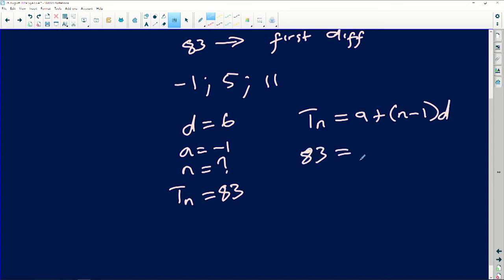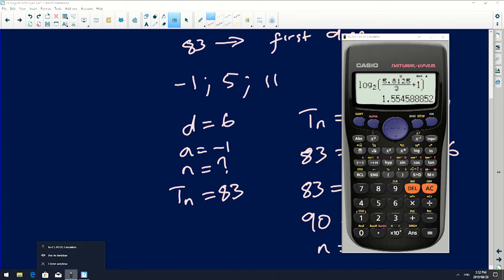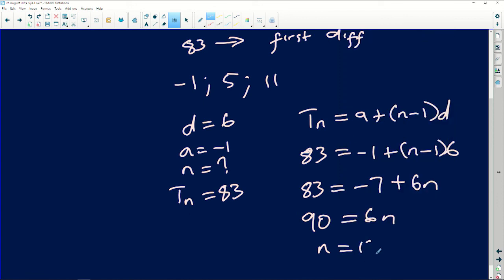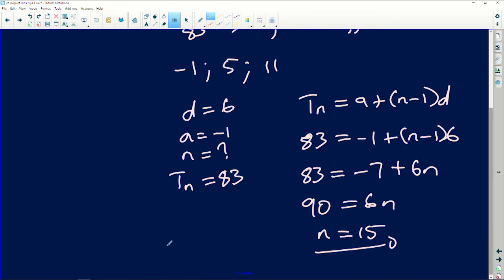My this will be 83 is equals to -1 plus (n - 1), which is what I want, multiplied by 6. So this is 83 is equals to -7 then plus 6n. And then I will have 83 plus that will be 90 is equals to 6n. Therefore n will be equals to—quickly let's verify that. If I say 90 divided by 6, it will then give me 15. So my n will be equals to 15. So it is between term number 15 and term number 16.